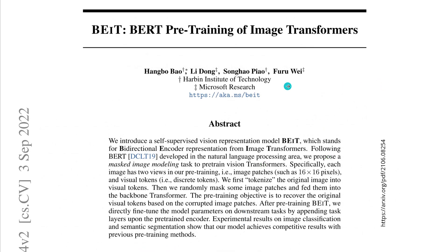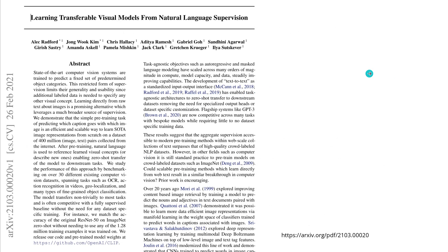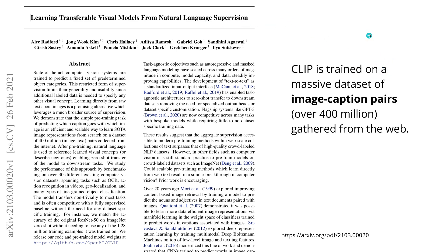And of course you know CLIP — from OpenAI, imagine 2021 — learning transferable visual models from natural language supervision. The beauty of CLIP is that it was trained on a massive dataset of image-caption pairs, over 400 million gathered from the web. And it consists of three components, which is now important because this helps us understand the new insight by MIT and Stanford University.